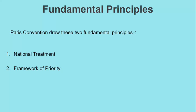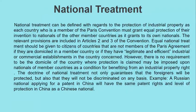National Treatment can be defined with regard to the protection of industrial property as follows: each country that is a member of the Paris Convention must grant equal protection of inventions to nationals of other member countries as it grants to its own nationals. The relevant provisions are in Articles 2 and 3 of the convention. Equal national treatment should also be given to citizens of non-member countries if they are domiciled in a member country or have a legitimate industrial or commercial establishment there.